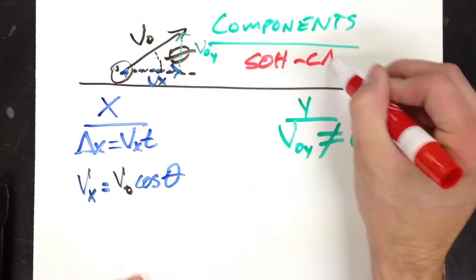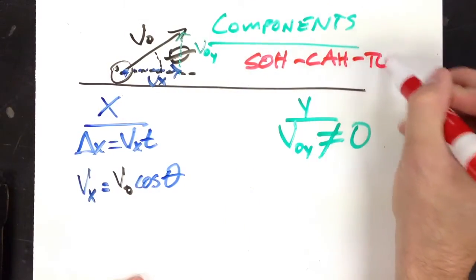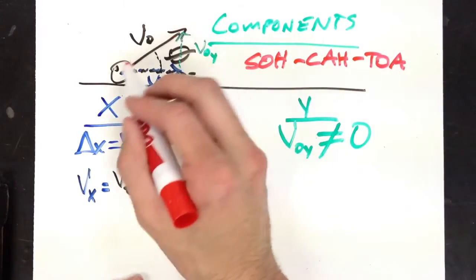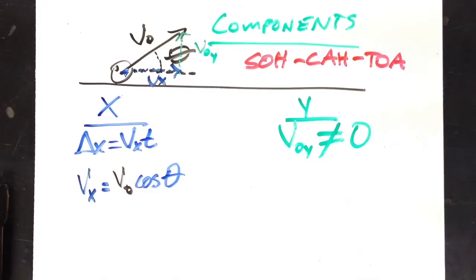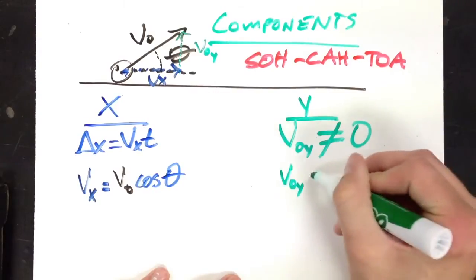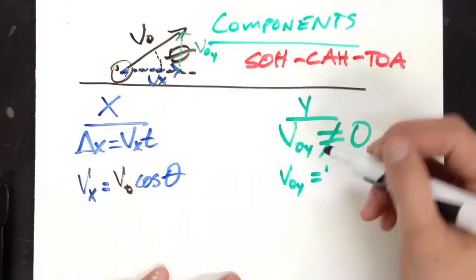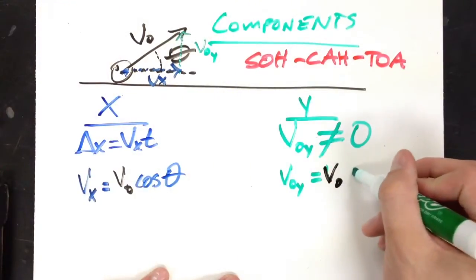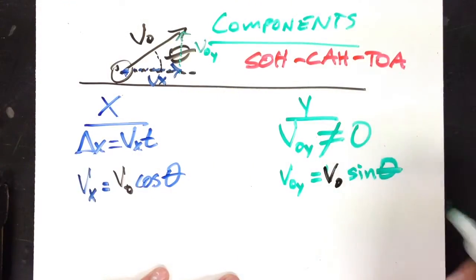Adjacent over hypotenuse. My hypotenuse here is the v0, that initial velocity. So looking at that, v0y is going to be v0 sine of theta.